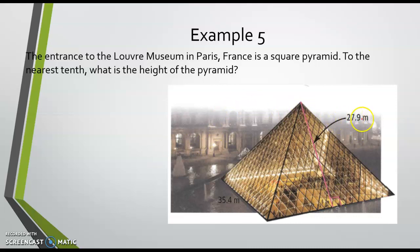To the nearest tenth, what is the height of the pyramid? Now this red line with the 27.9 pointing at it - that's our slant height, because that's the height of the slant. But when we talk about height, that's when we drop this line straight down to the center of the pyramid.